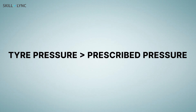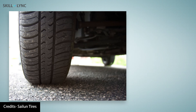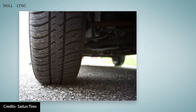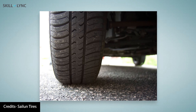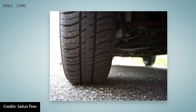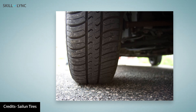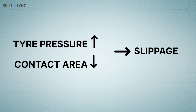On the other hand, if your tire pressure is much higher than the value prescribed in your manufacturer's manual, then your tires will be overinflated. Because of this, very little area of it will be in contact with the road. This reduces the total grip and leads to loss of traction.